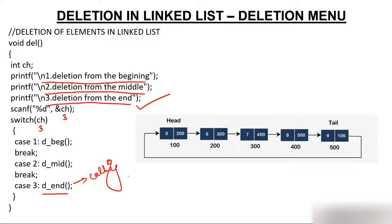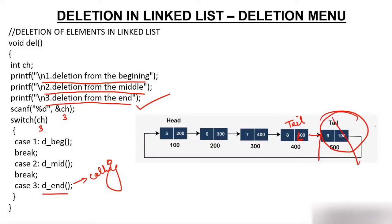Prior to this you can see the linked list. Your job is to delete this last node. The moment you delete this node, the previous node will become the tail. And instead of address 500, the value 100 — the address of the head node — will come. So this pointer will go from the last node to the head node, and the last node will get deleted.